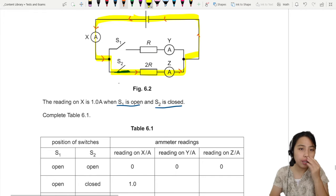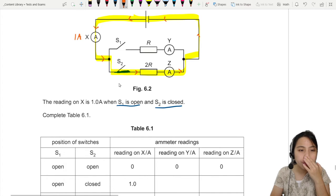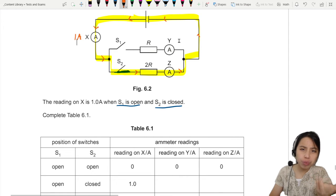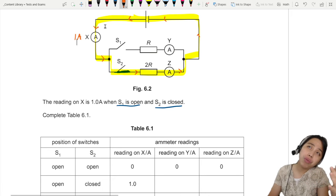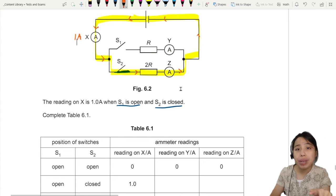So what do we have here? We need to complete the table. So the first one, S1 is open, S2 is closed. What's the reading on X? We got current, 1A. Reading on Y. Is there any electricity flowing through this Y? Electricity will only, electric current will only flow in a complete path. So there's a dead end here. There's not going to be any current. So I'm just going to go with 0.